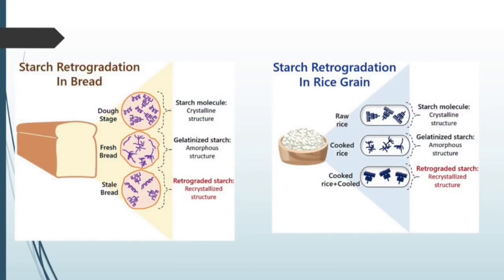Starch retrogradation in bread and rice grains is very common. These are the starch molecules: when we heat and provide water, they gelatinize, and the amylopectin structure starts absorbing water. Once cooled or stored for a long time, retrogradation occurs — recrystallization tries to occur, leading to staling of bread. Similarly in rice: gelatinization occurs during cooking, and when cooked rice is cooled, the starch molecules realign themselves and retrogradation occurs.